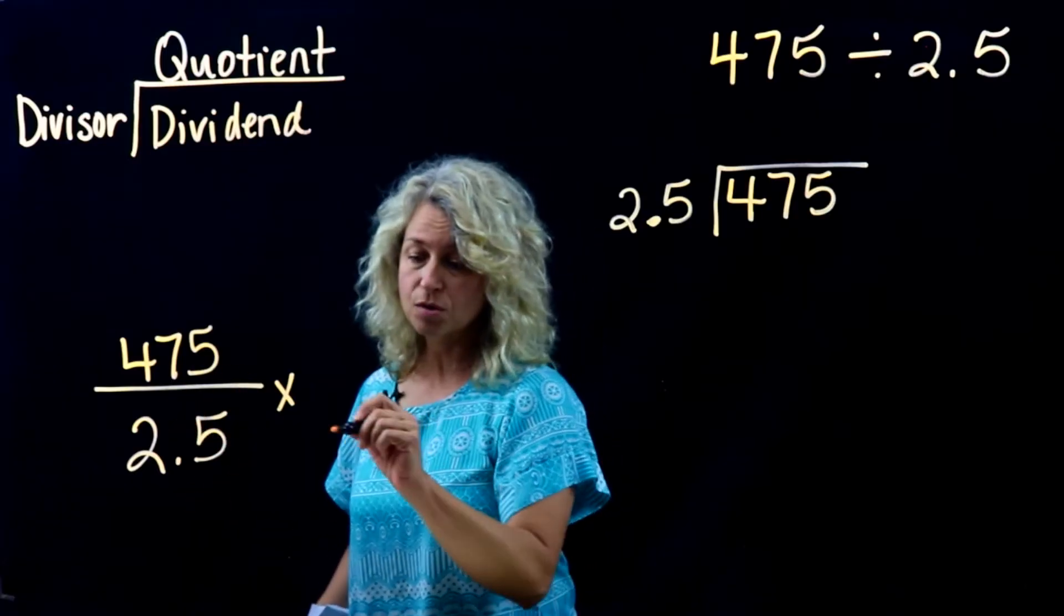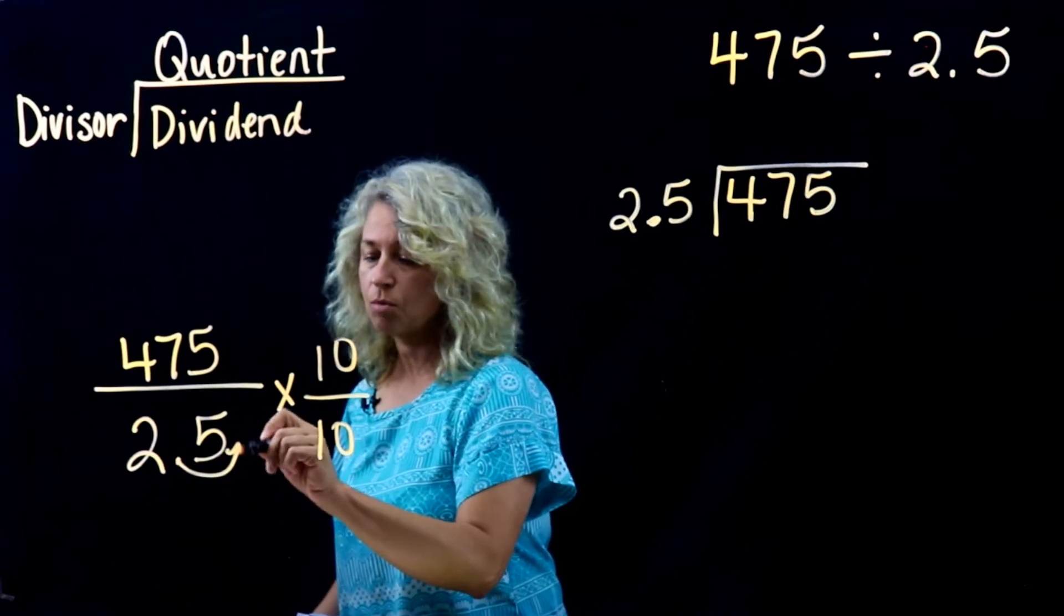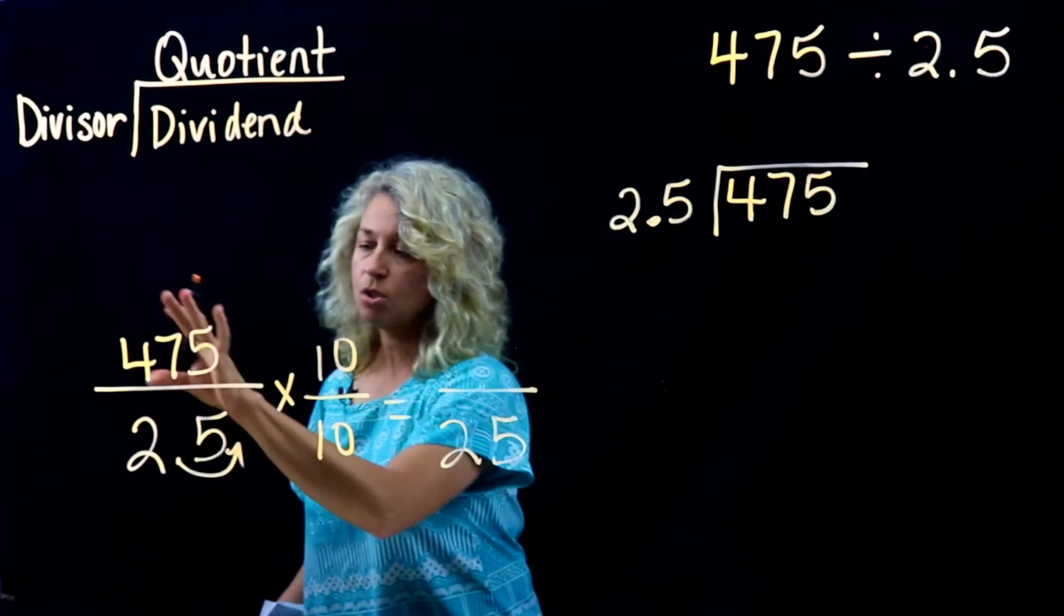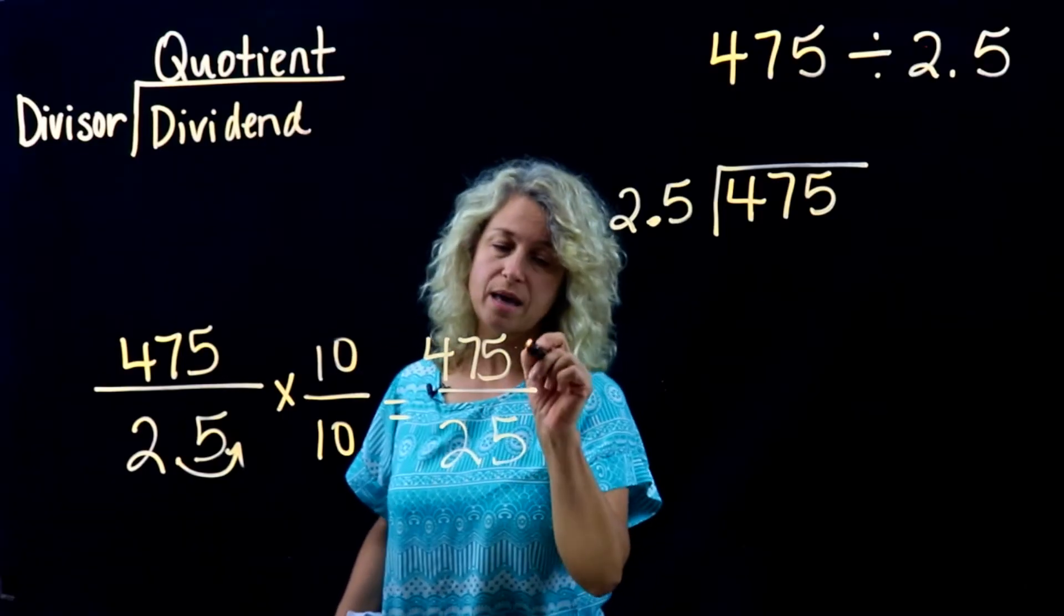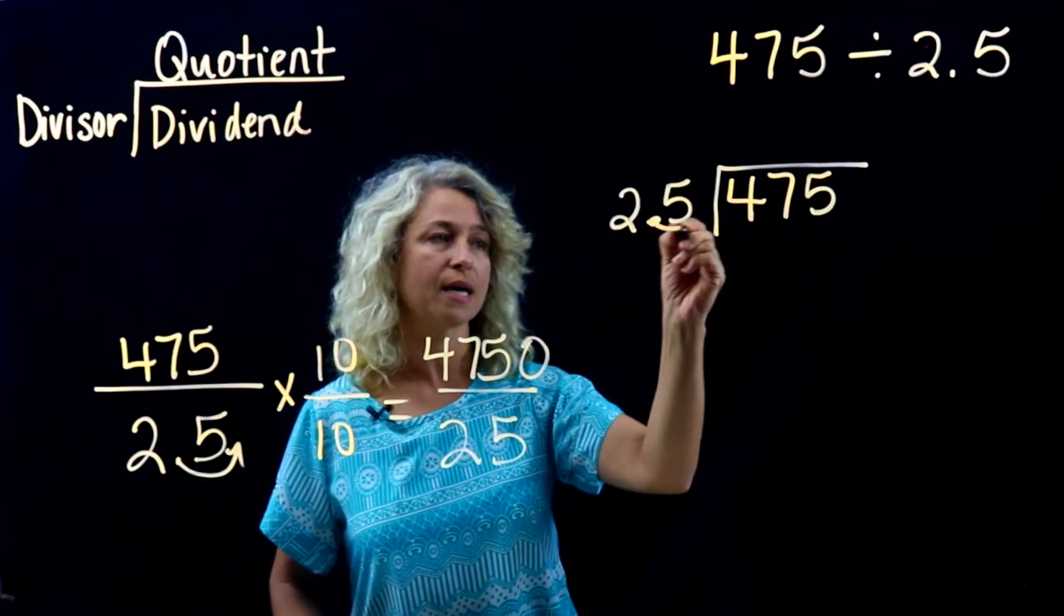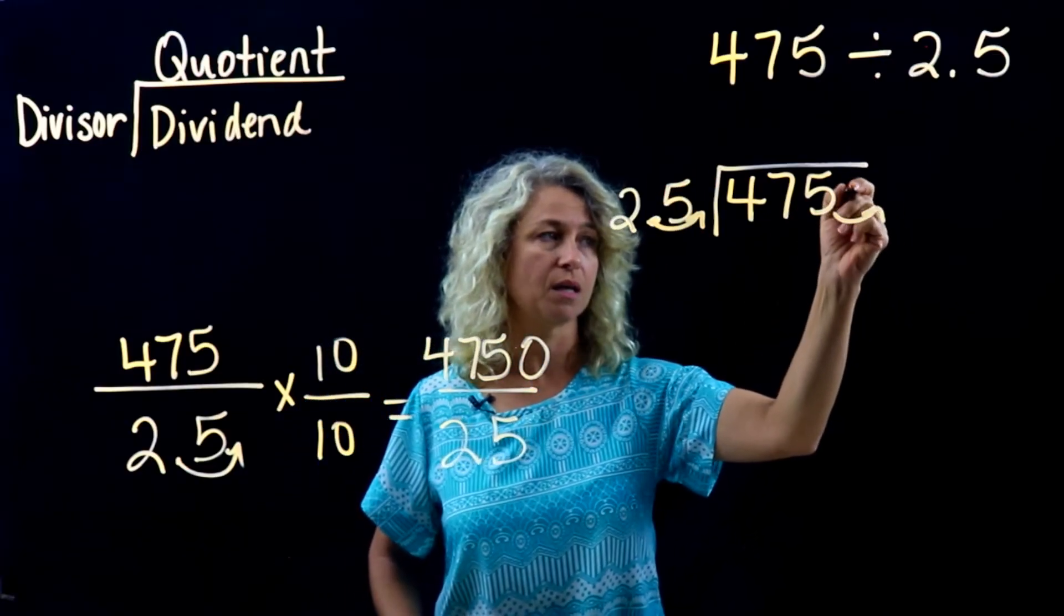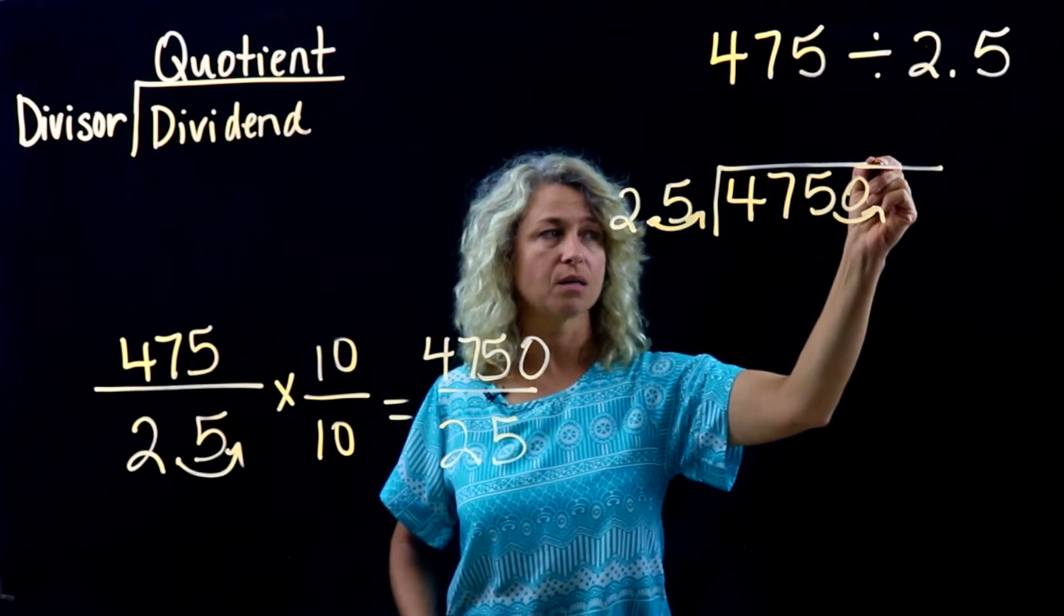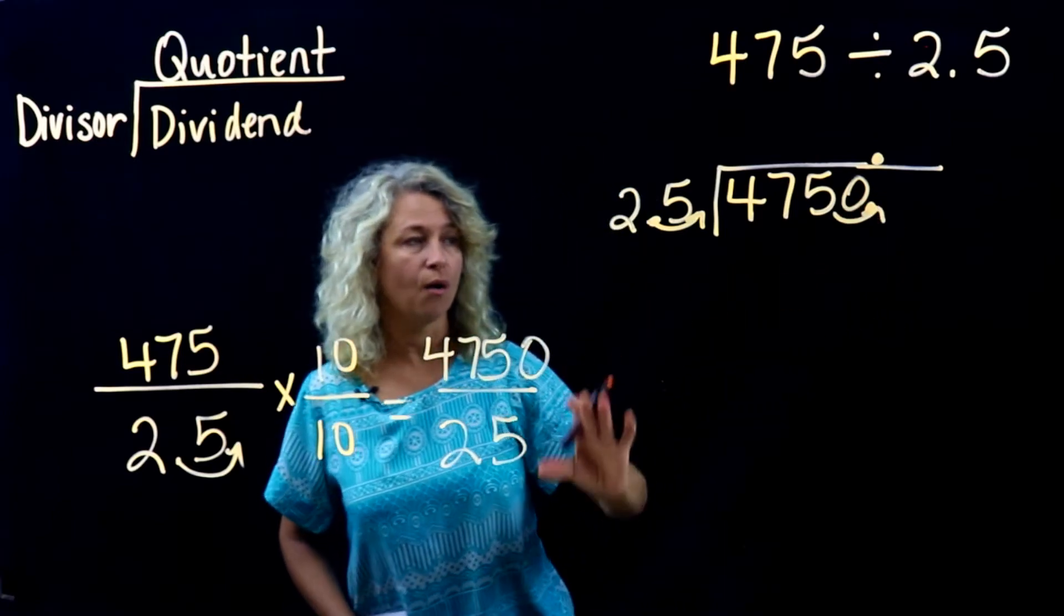If we want to make a whole number out of two point five with the powers of ten, remember if we just say times ten that will move our decimal place one time over and we will get the whole number twenty-five, and that's what we need. So let's do the same thing to the top number. Four seventy-five times ten, just add a zero. So when we do that here, you'll move the decimal one place to make the whole number twenty-five. Do the same in the dividend and add a zero. Now we can extend this and here is our decimal point right here.